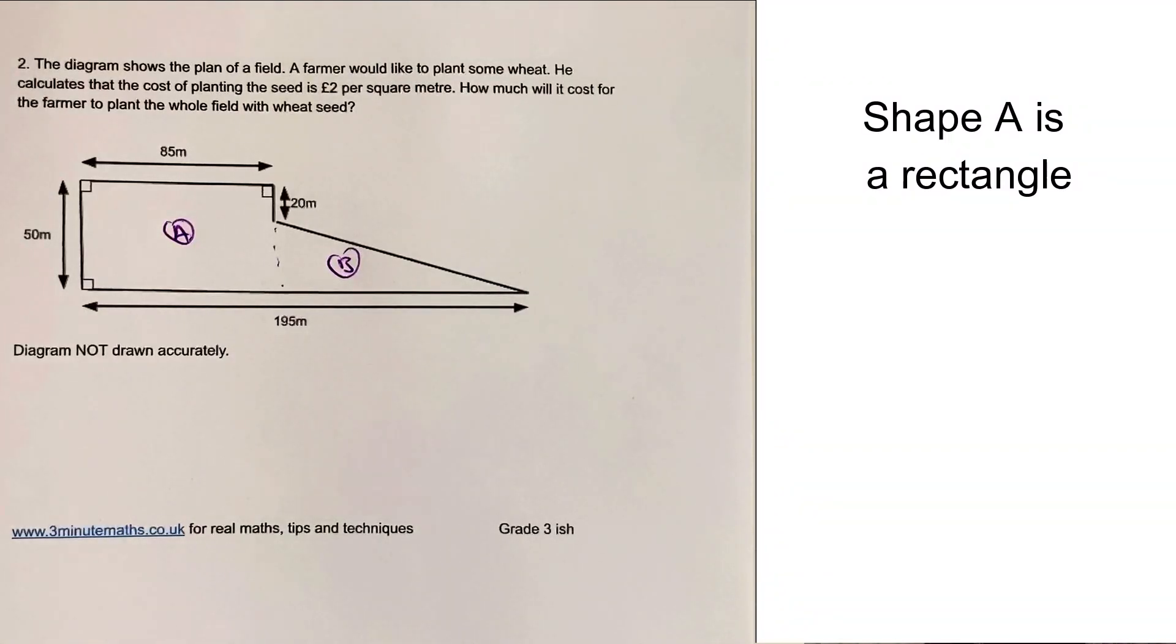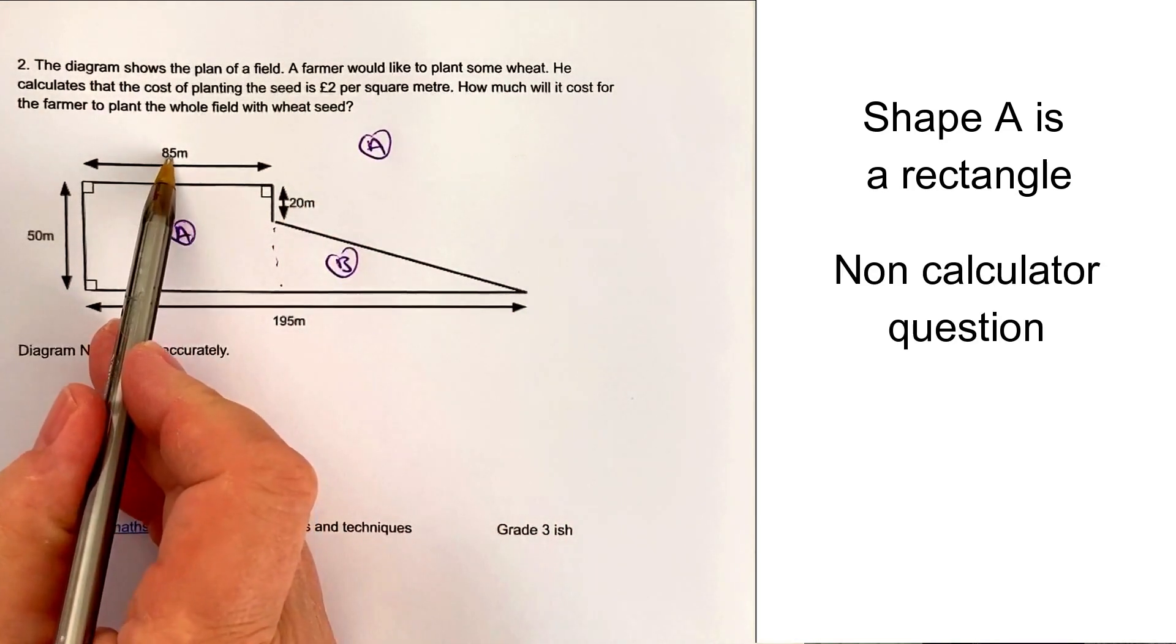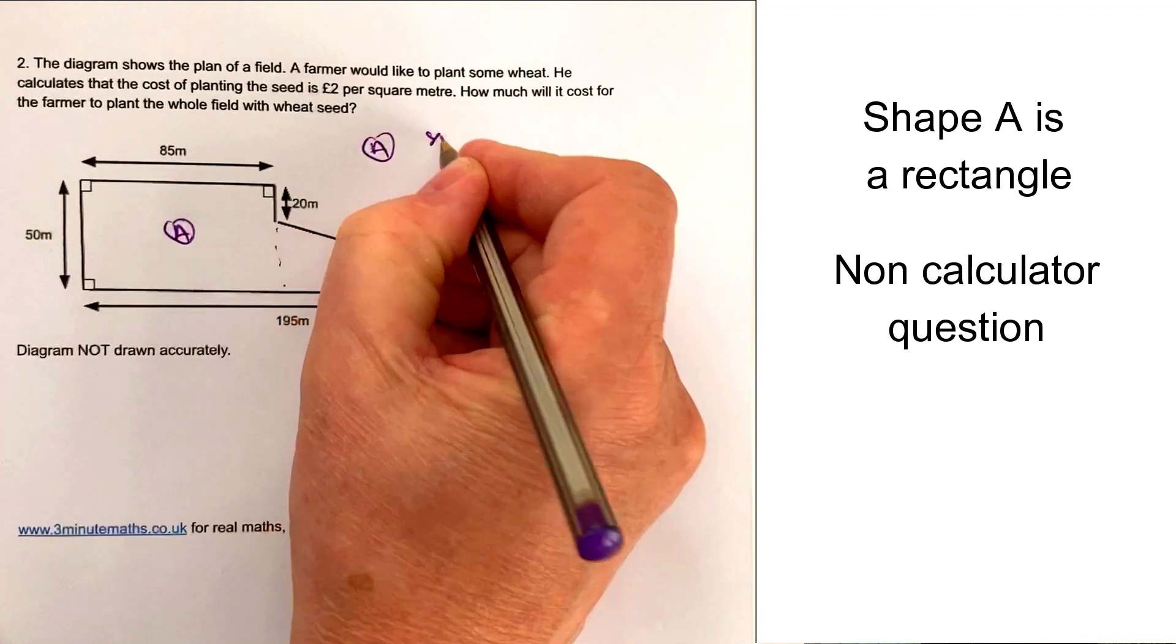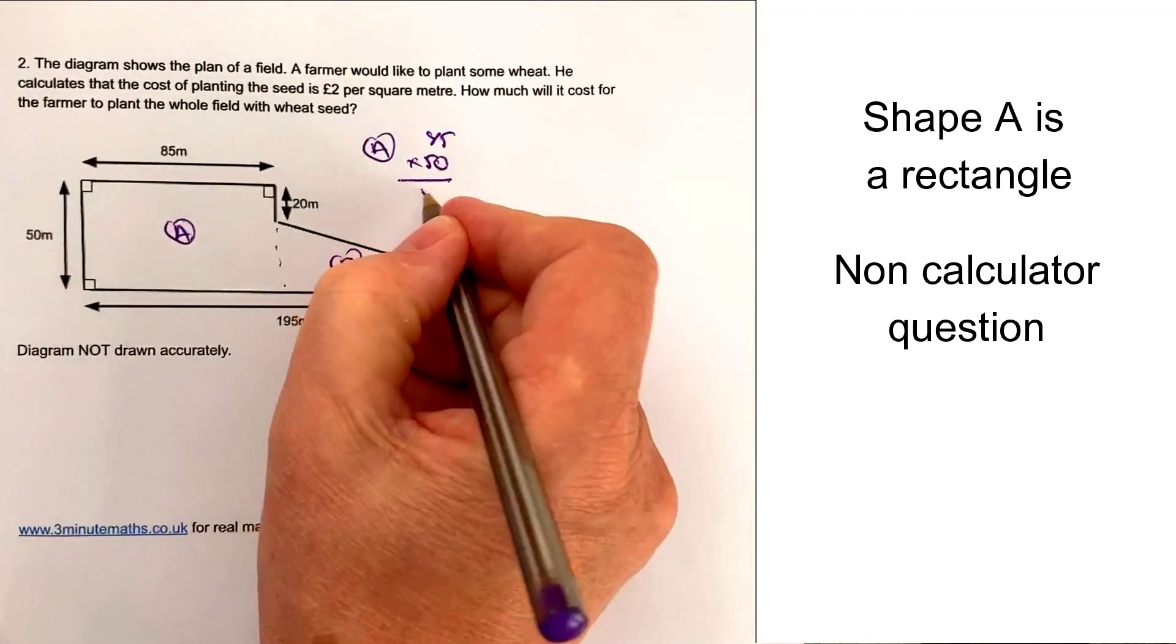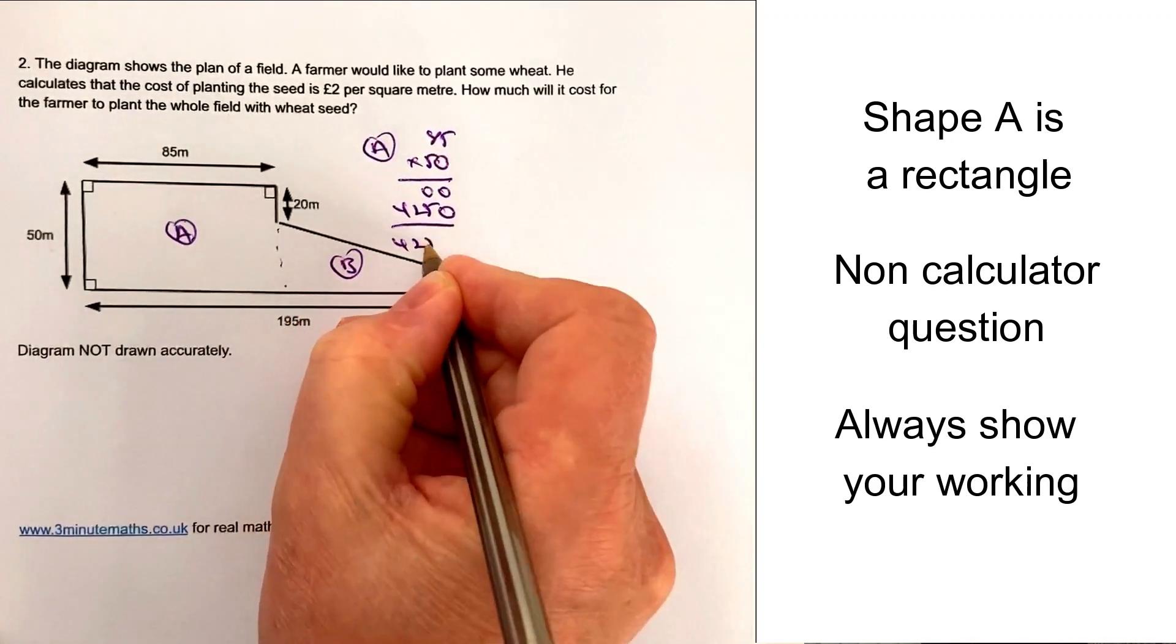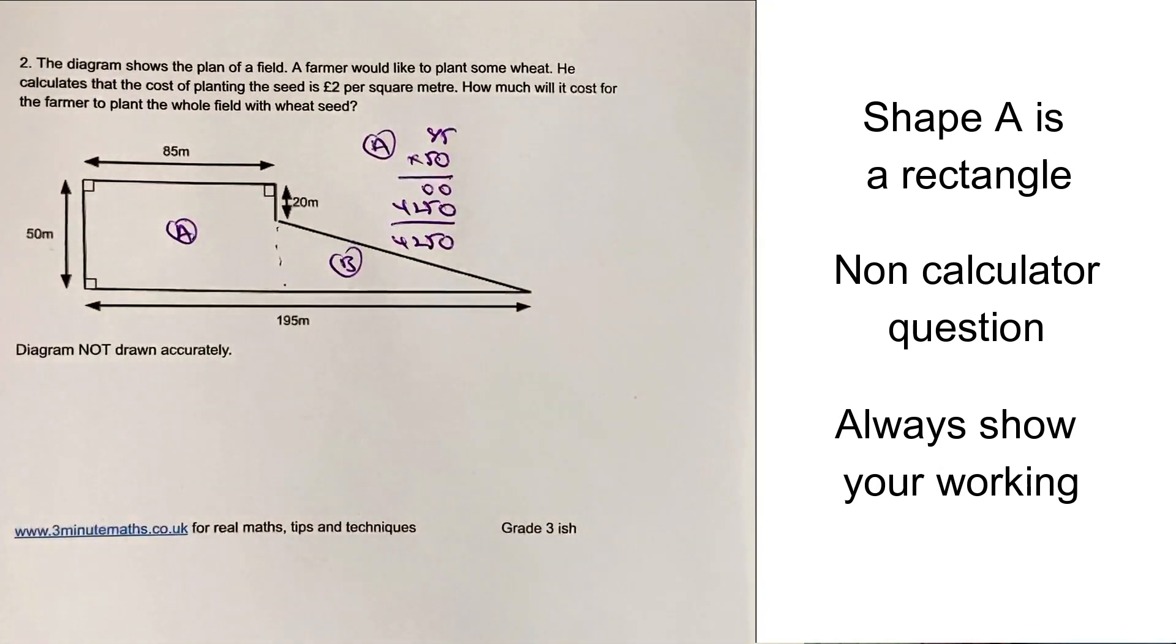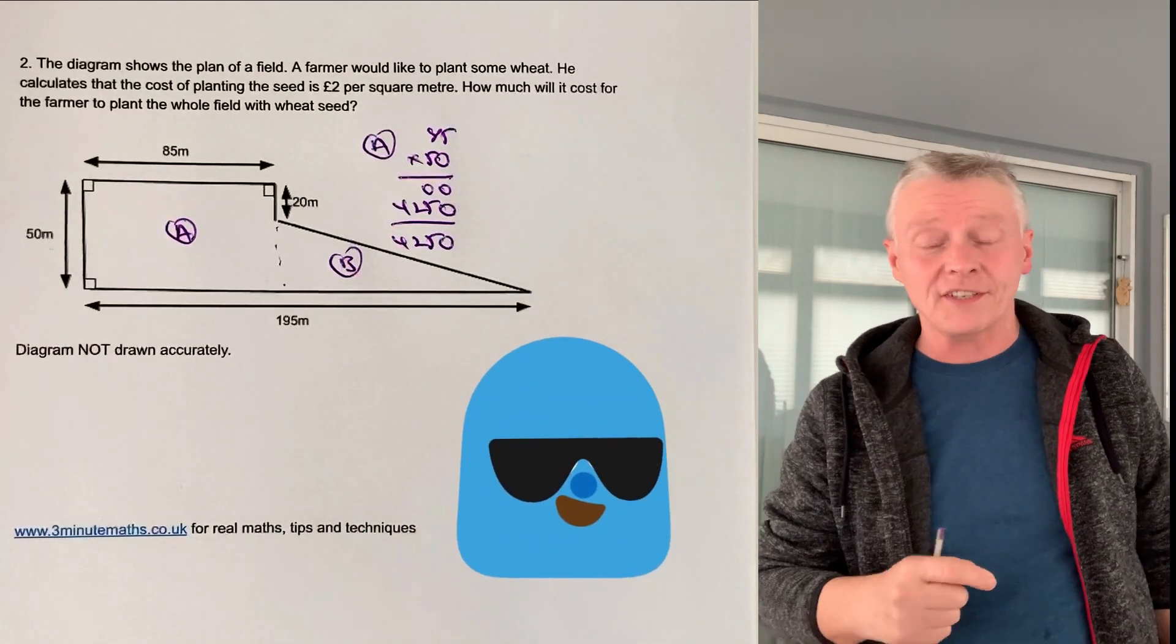With the first one, shape A, to work out the area it's going to be 85 times 50. I'm very aware you might do things slightly differently to me. You might want to use partitioning or something like that, but hopefully you'll get the answer at 4250 for the value of rectangle A.